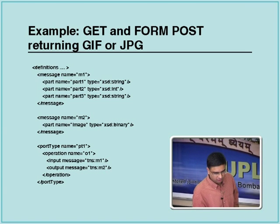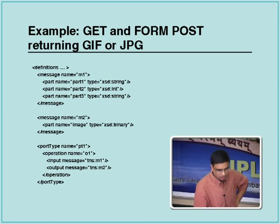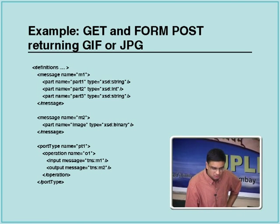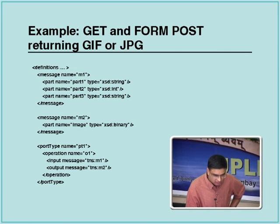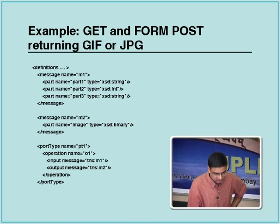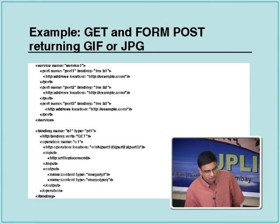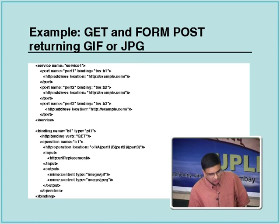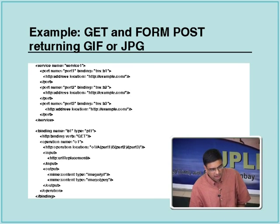Here is an example of a GET and a FORM POST returning some image. Message M1 has three parts — two strings and an integer. Message M2 has an image of type XSD binary. An operation O1 is created under port type PT1, which has input message M1 and output message M2. These are types of messages that can be reused — TNS colon M1 refers to this message type and M2 to the other.